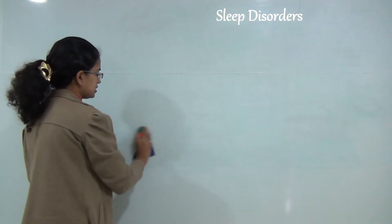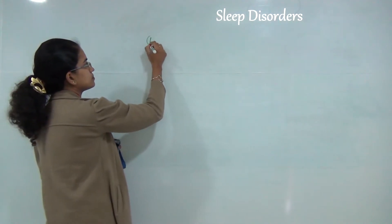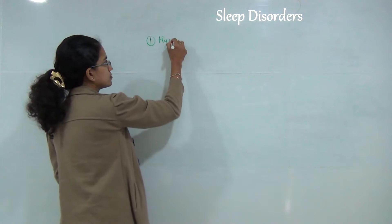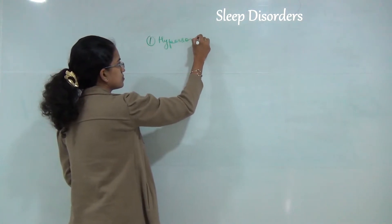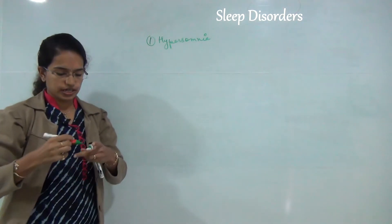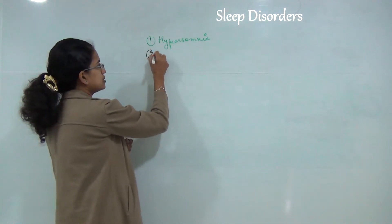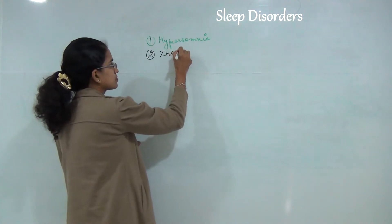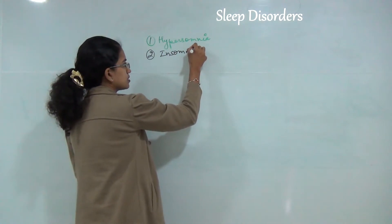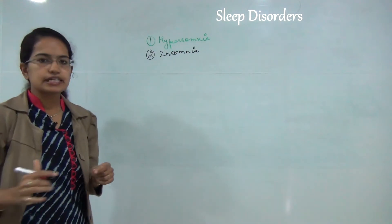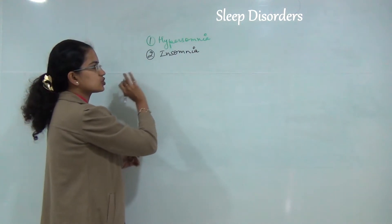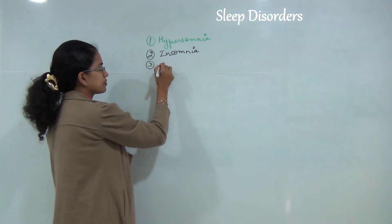The first is hypersomnia, which is the increased activity or alertness during sleep. Next is insomnia, which means the inability to sleep, or a person is not able to sleep during the night.